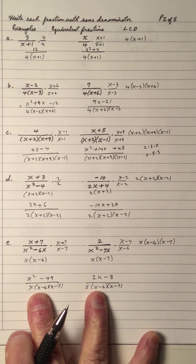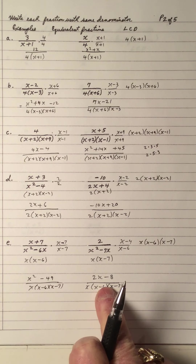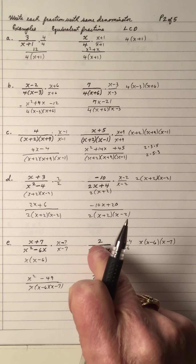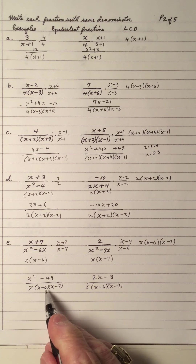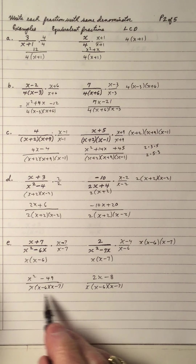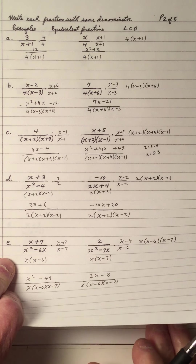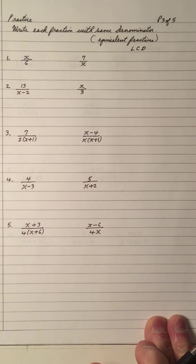Two fractions, both are equivalent — this one is equivalent to this one, and this one is equivalent to this one. But they have the same denominator, so we're ready to add. Perfect.